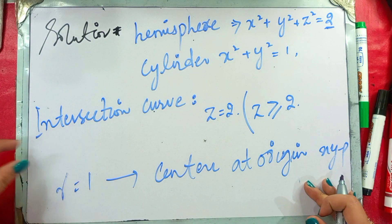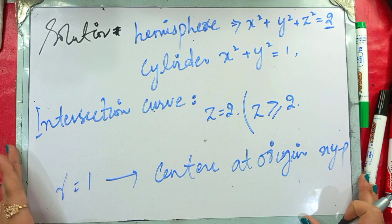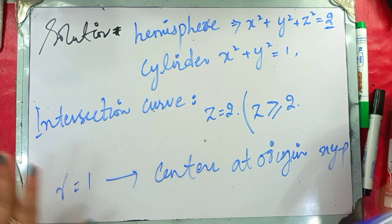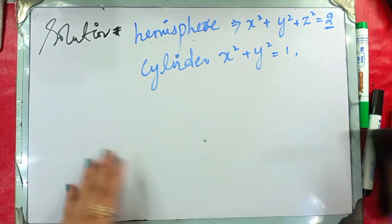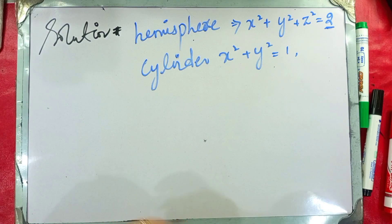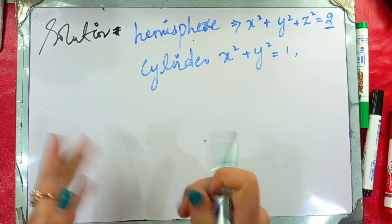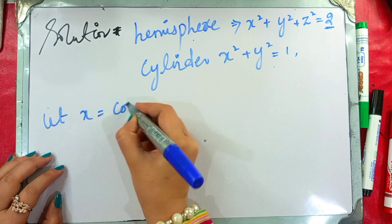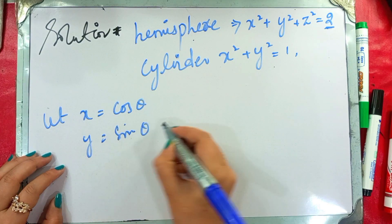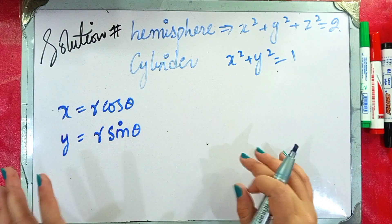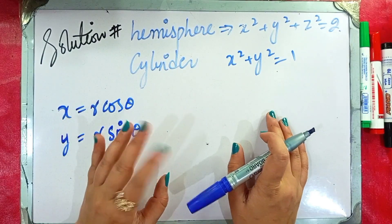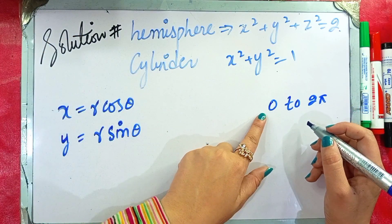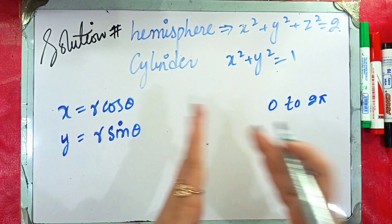Now we have to discuss the parameterization of the curves. First of all, we have to change the curve into polar. Let x = cos θ and y = sin θ. Now let's talk about the limits. We use θ from 0 to 2π for the hemisphere, to convert from Cartesian into polar.